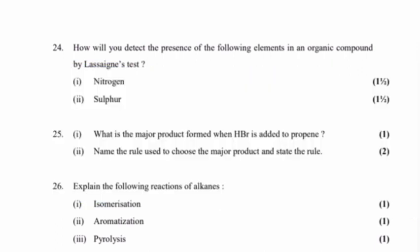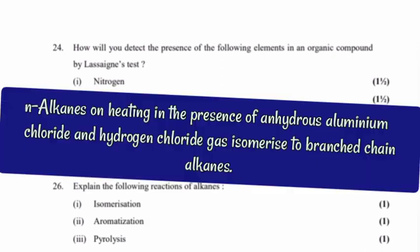Question 26: Explain the following reactions of alkanes. Part 1: Isomerization. Answer: n-alkanes on heating in the presence of anhydrous aluminum chloride and hydrogen chloride gas isomerize to branched-chain alkanes.